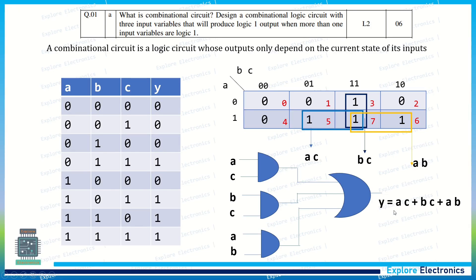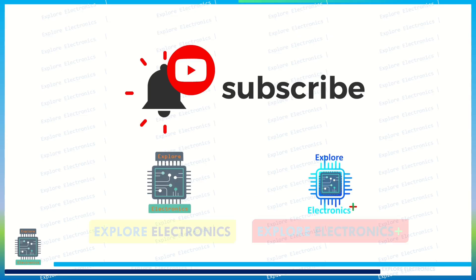This is how we can implement any combinational logic given with the logic description like this. First, we need to take the truth table, then write the outputs, then get the expression through the K-map, then finally implementation. Thank you.